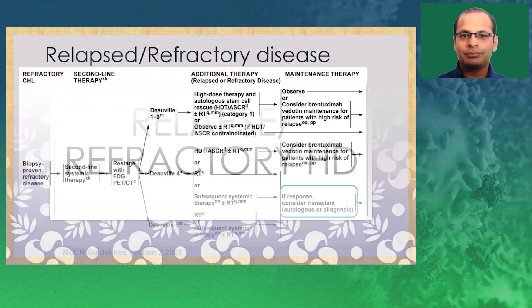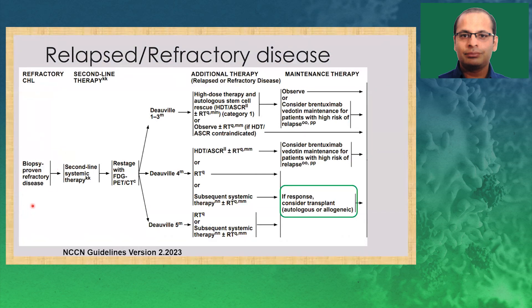For relapsed and refractory disease, any suspicion of relapse should be proven with biopsy unless the node is totally inaccessible. Otherwise, always try for biopsy to confirm refractory disease; transformation incidences have been reported in Hodgkin lymphoma as well. The first-line approach is second-line systemic therapy for two cycles, then restage. If responding, consider high-dose chemotherapy — autologous transplant. For certain cases where transplant is contraindicated, observe with RT. For high-risk cases, consider brentuximab maintenance or observation. If the disease shows partial response (Deauville 4), still consider transplant plus/minus RT and brentuximab maintenance. For Deauville 5 — non-responsive or new lesions — transplant is not indicated; give RT or further systemic therapy; if disease responds, consider allogenic transplant.